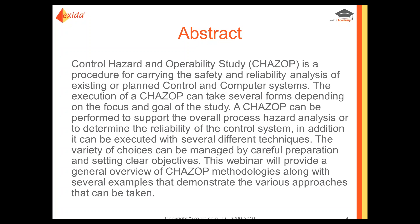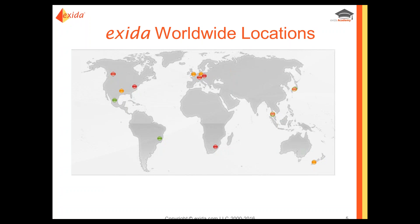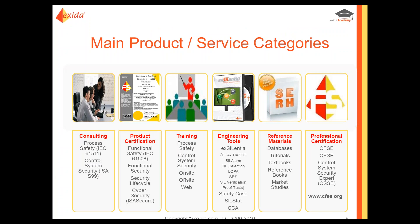A little background on Exida first — we're a global organization with offices and personnel around the world, as you can see by the map. We help our customers several different ways: we provide consulting, product services, training, engineering tools, reference material, and professional certification. We're often involved with helping customers perform process hazard analysis, and specifically CHAZOP. We help with all parts of the lifecycle activities and help equipment manufacturers with certification.